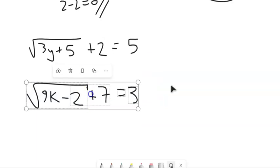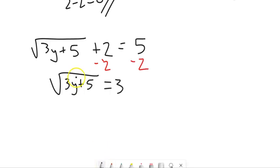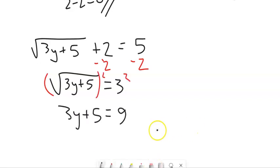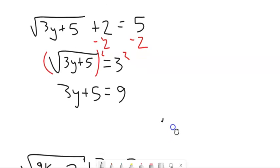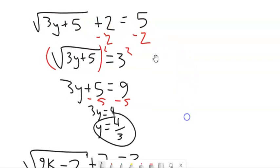Let's do this next one. The square root is not all alone, so I'm going to subtract 2 from both sides first. Square root is not equal to a negative, so it should be good. I'm going to square both sides. Now I just have this linear relationship to solve, so I'm going to subtract 5 and then divide by 3. It looks like y should equal 4 thirds. I can plug it back in to check it. I have 3 times 4 thirds, so this is 4. 4 plus 5 is 9, square root of 9 is 3, 3 plus 2 is 5. That checks out.